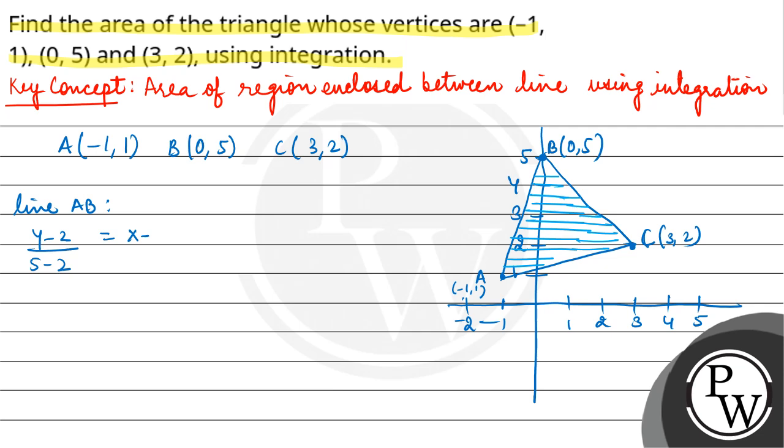Sorry, AC. First of all, let's find out AB, which is Y minus 1 upon 5 minus 1 equals to X minus (-1) upon 0 minus (-1), so this gives you 4X minus Y plus 5 equals to 0.